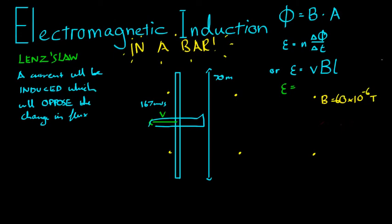So let's fill in the formula. EMF is equal to V, B, L. Which is equal to 167, times 60, times 10 to the negative 6, times 70. And I have that coming to 0.7 volts. So nothing really to worry about. But if there were any very sensitive electronics in the wings, they might experience some kind of anomalous behaviour.